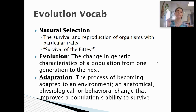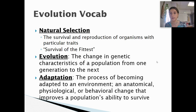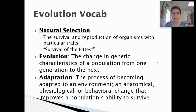The next word is adaptation — the process of becoming adapted to an environment. It's an anatomical, physiological, or behavioral change that improves a population's ability to survive. If an organism is adapted to their environment, they will be able to survive and reproduce. If an organism has a trait that allows them to survive in their environment, they will reproduce and pass those traits on to their offspring in the next generation.